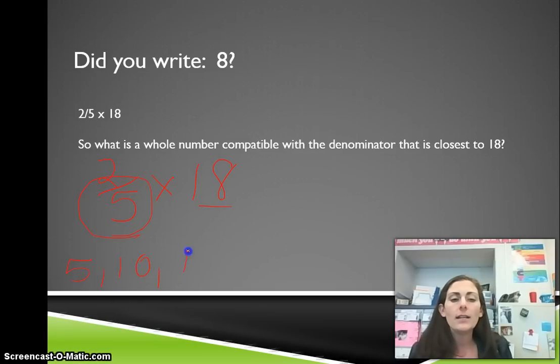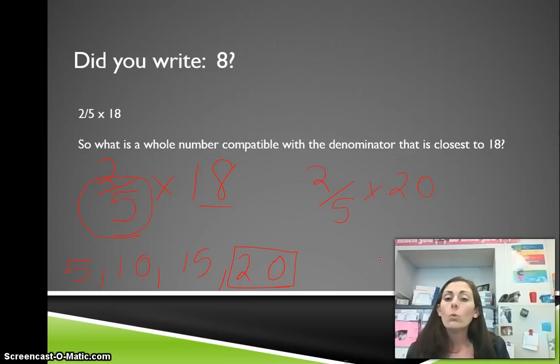We have 5, 10, 15, 20. And 20 would be a good compatible number. So it would be two-fifths times 20. Therefore, 5 goes into 20 four times, and 4 times 2 is equal to 8. So a good estimate for two-fifths times 18 is 8.